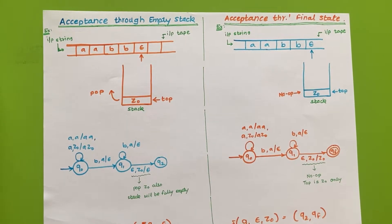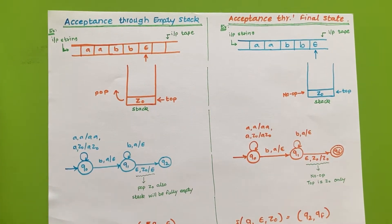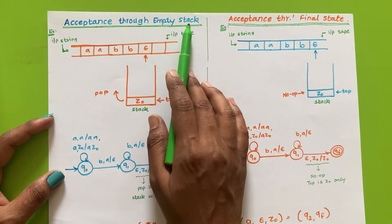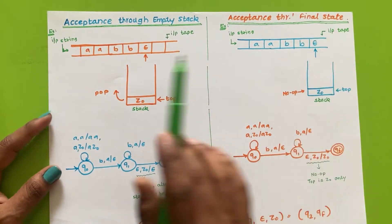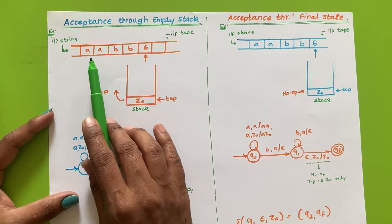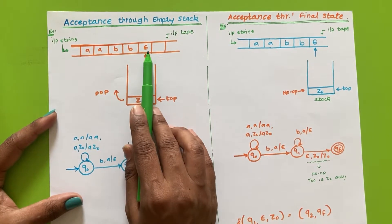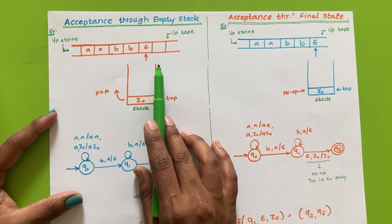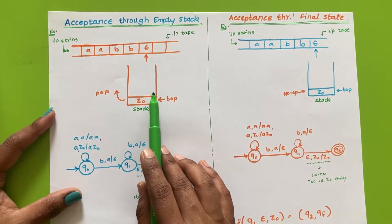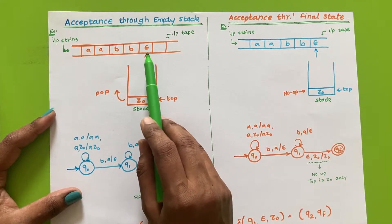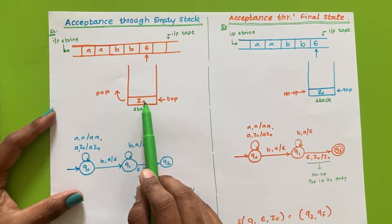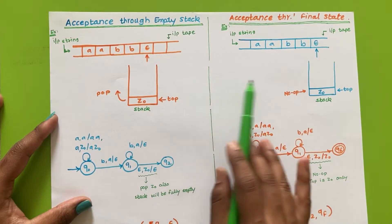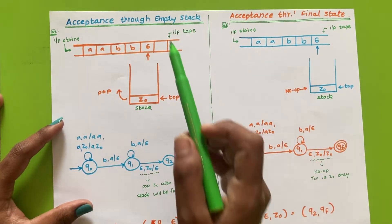Hello friends, welcome back to the channel Learn With Art. Now we will see how to draw PDAs in two methods: acceptance through empty stack and acceptance through final state. Let us consider that we have finished reading the string — the last symbol to read from the input tape is empty. At that time, suppose we have finished all operations from the stack as well, and the last symbol left on the stack is Z0 only.